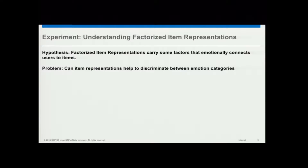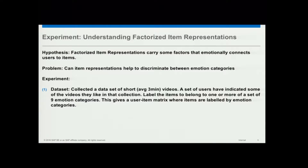I don't know whether it is true, so to address this, I represent it as a problem statement: can item representations help to discriminate between emotion categories? If these factors carry some emotion representation, I should be able to use them to discriminate between emotion categories. I set up an experiment with a dataset collected using Amazon Mechanical Turk for videos. We have a set of users who have indicated their likes on those videos — these are implicit feedback — and I also have labels based on nine emotional categories on those videos.